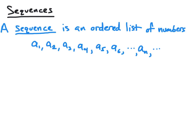By a sequence, we simply mean an ordered list of numbers in the form a1, a2, a3, a4, and so on. The letter a here is being used to represent the various numbers in our sequence, and the subscripts are indicating the placement in the sequence of that particular number.